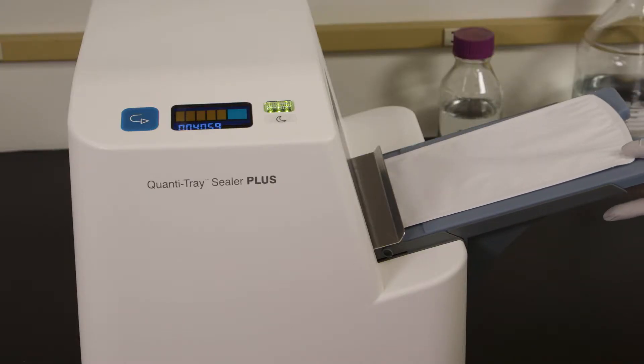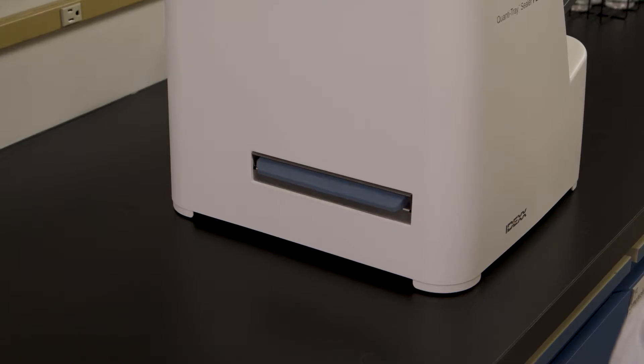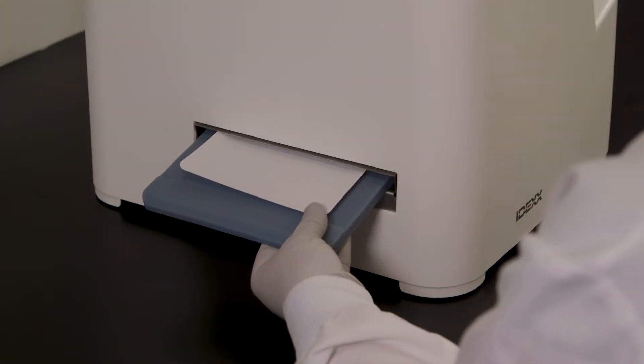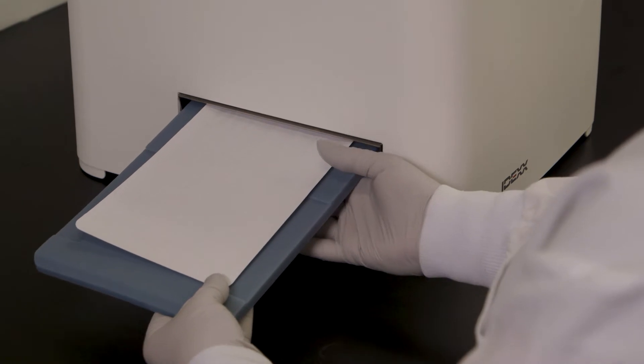If you need to reverse the motor, press and hold the reverse button. However, do not reverse the motor if the rubber insert is completely inside the sealer. The sealer distributes the sample mixture into the Quantitray LEGALERT wells, seals the wells and partially ejects the sealed tray. Remove the rubber insert and tray from the sealer.